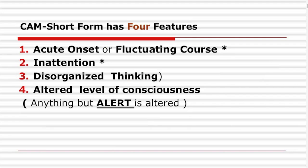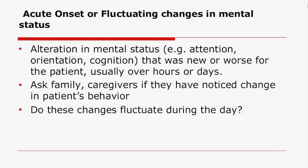The CAM assessment in short form has only four features. The first feature is acute onset or fluctuating changes in mental status. Knowing someone who has met the patient before and speaks their language gives you an opportunity to discuss how they were before they got to the hospital. It's important to know what their cognitive baseline was before hospitalization, but also whether there has been a sudden or recent change in their behavior.